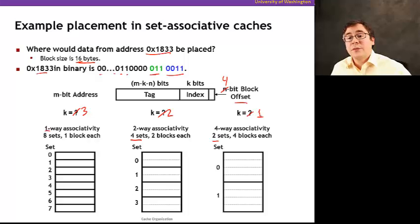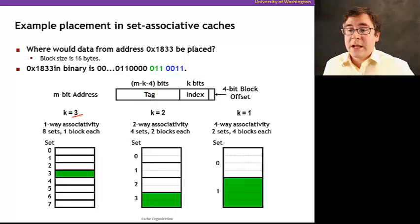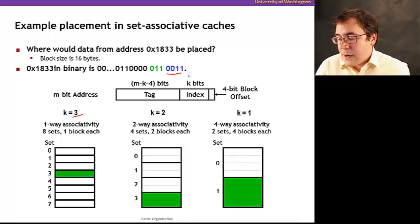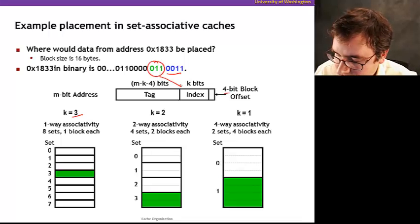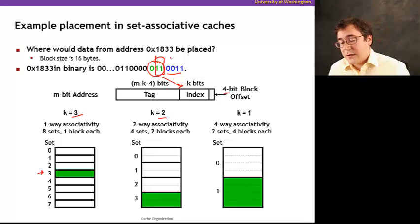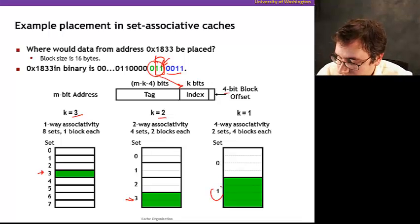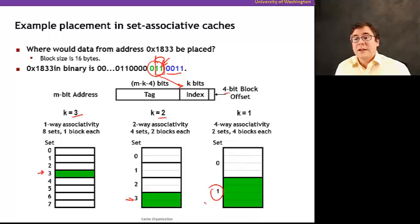Whatever is left after offset and index bits is used for the tag — which is necessary to tell what data is actually stored in the cache. For 3 index bits: the bits just above the 4-bit offset give index 011, which is 3. For 2 index bits: those 2 bits also give 3 — that's where it goes in my 2-way associative cache. For 4-way with 1 index bit, only that single bit determines which set the data goes into.